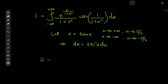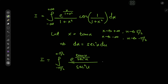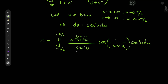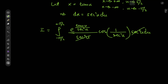So our integral is now from negative π/2 to positive π/2 of e to the tangent u, divided by 1 plus tangent squared — which is secant squared u — divided by secant squared u, times the cosine of 1 divided by secant squared u, with secant squared u du as the differential. We have some nice cancellation taking place.